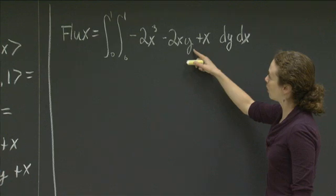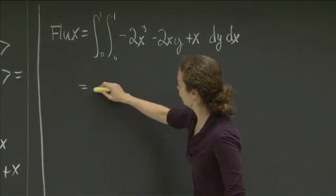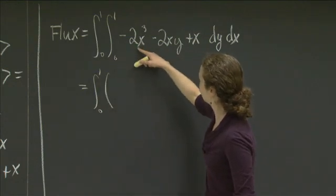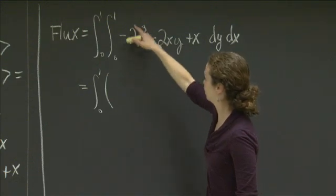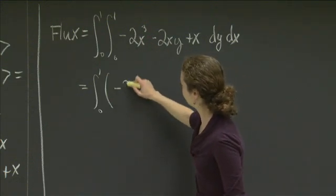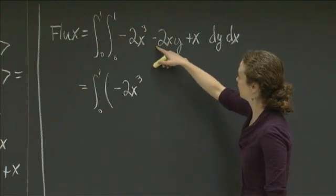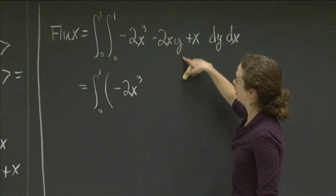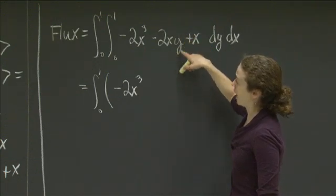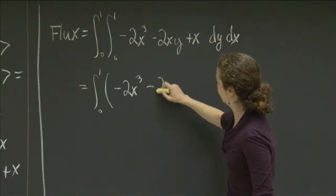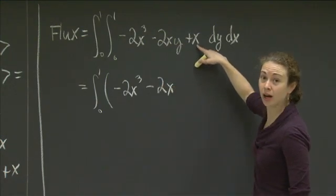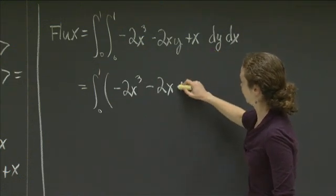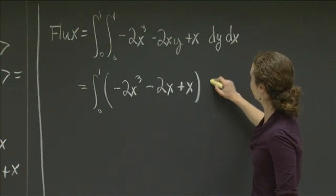So when we integrate in y, we should be careful. What do we get here? We're going to have the integral from 0 to 1. And then we're going to have this. We get a negative 2x cubed times y, and then evaluate at 0 and 1. So we just get a negative 2x cubed again. If we integrate this, we have a negative 2x y squared over 2. So at 0, we get nothing. At 1, we get a 1 half. And so we get minus 2x. And then here, when we integrate in y, we get x times y. And we evaluate that at 1 and 0, and we get just plus x.